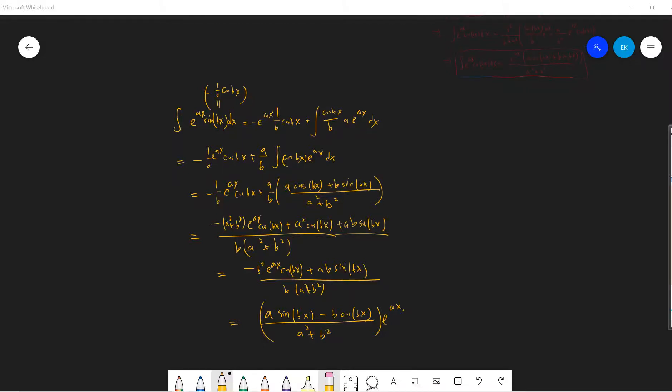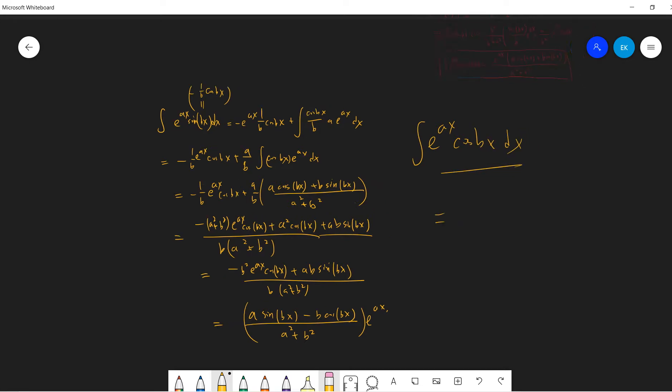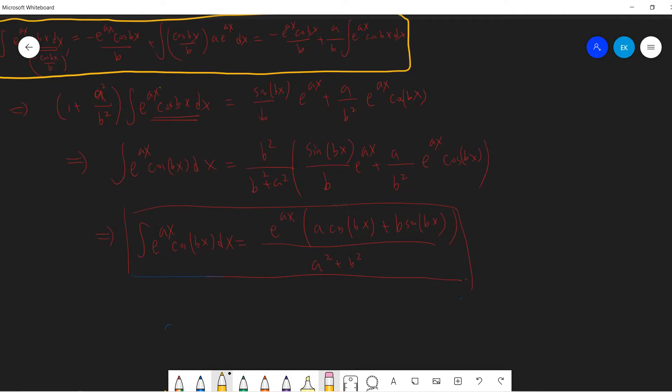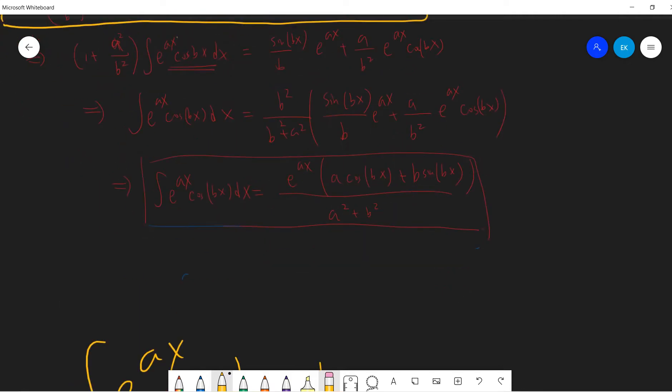Okay, so welcome guys. Last time we calculated integration of exponential a cosine bx, and I think we got our answer here. So it's exponential ax, a cosine bx plus b sine bx, divided by a squared plus b squared.